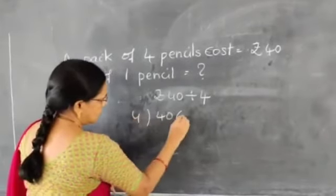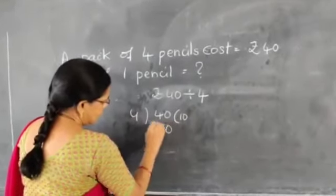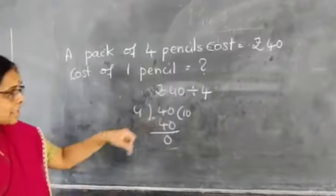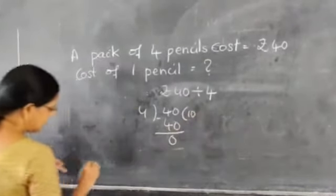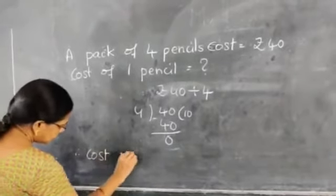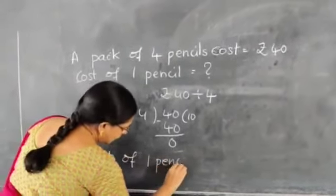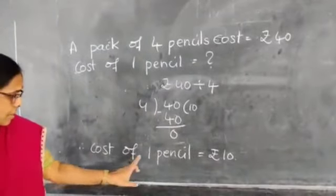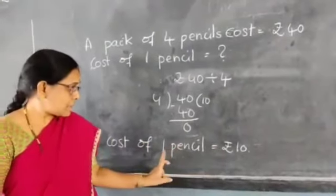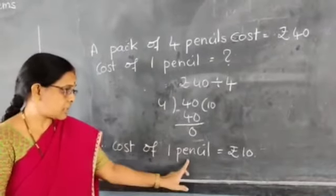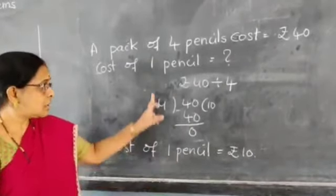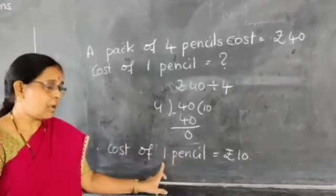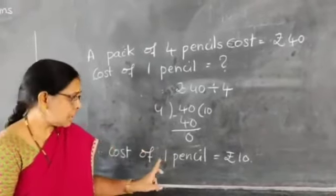4 times 10 is 40, so 40 minus 40 is 0. Cost of 1 pencil is rupees 10. Here we are finding 1 pencil cost — that is called unit cost. 1 pencil cost is unit cost.